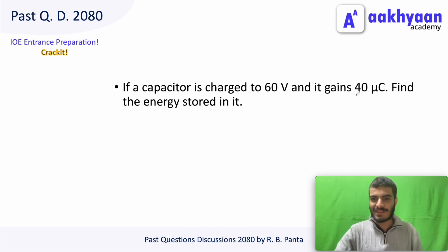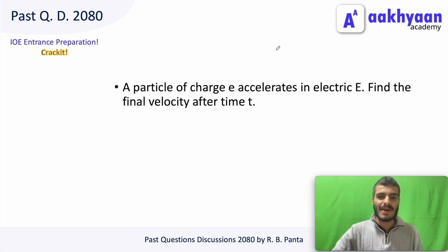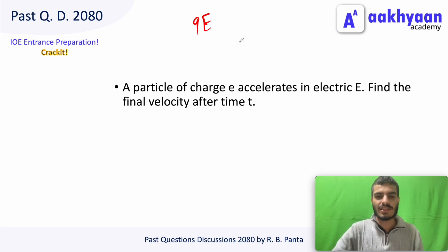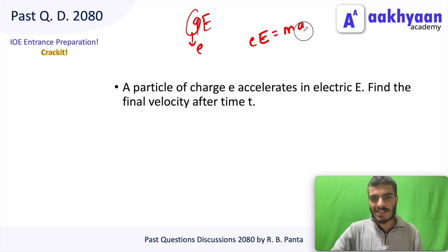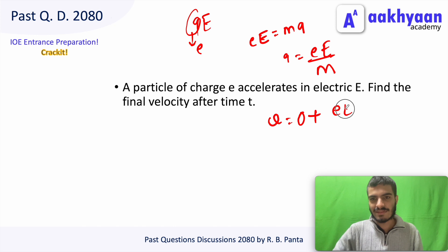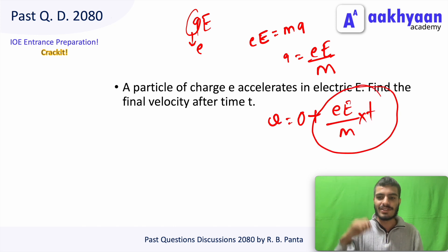A capacitor is charged to 60 V, capacitance is 40 μC; the energy stored is (1/2)CV². A particle of charge q is accelerated in an electric field. The electric force is F = qE, and by Newton's second law, acceleration = qE/m. For final velocity, using v = u + at, final velocity = u + (qE/m) × t.